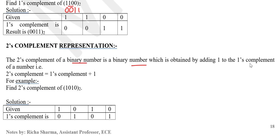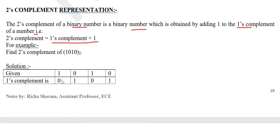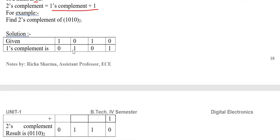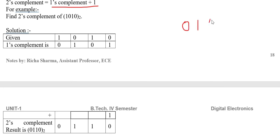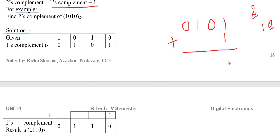Two's complement is found by first taking the one's complement and then adding 1 to it. For example, take 1010: its one's complement is 0101. Then add 1 to get the two's complement. 1 plus 1 in binary is 2, written as 10, so the sum bit is 0 and 1 goes as carry. Continuing: 1 plus 0 is 1, and so on. The two's complement result is 0110.